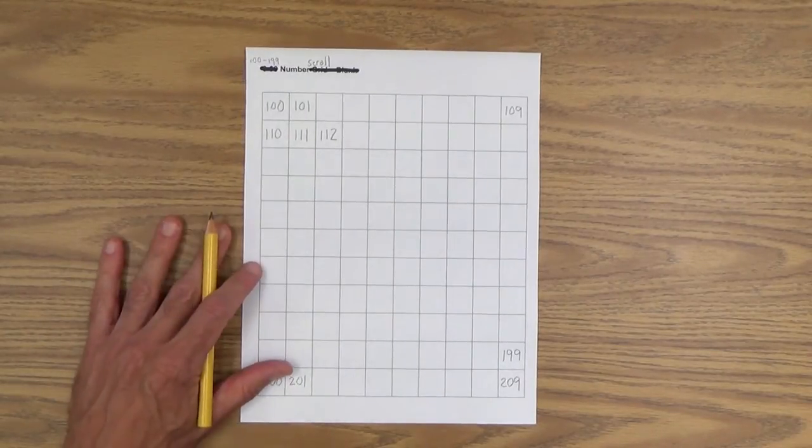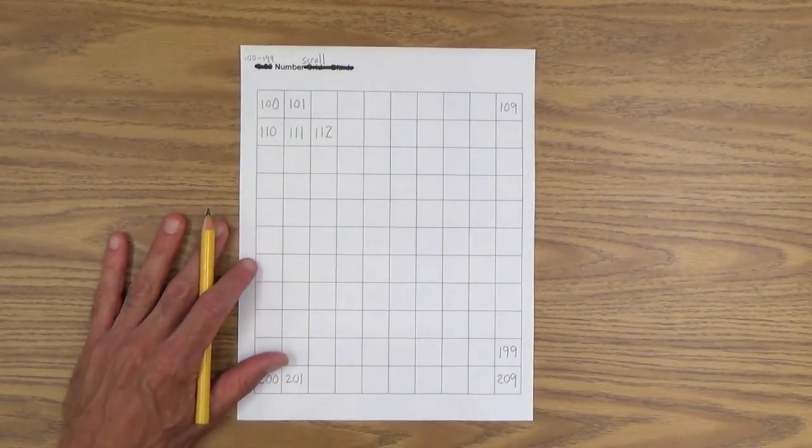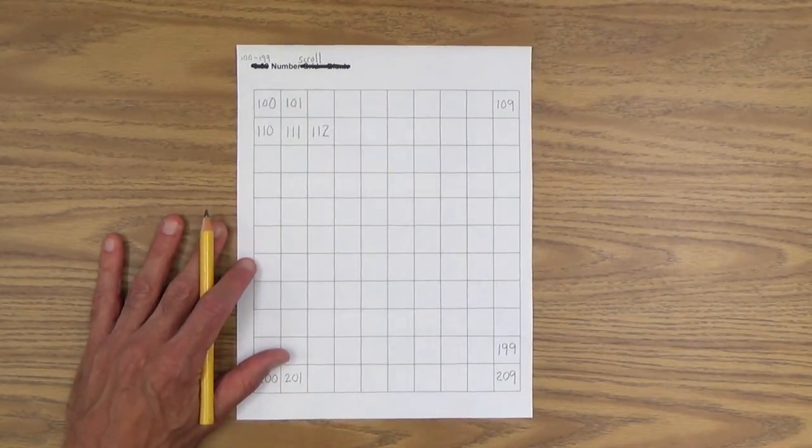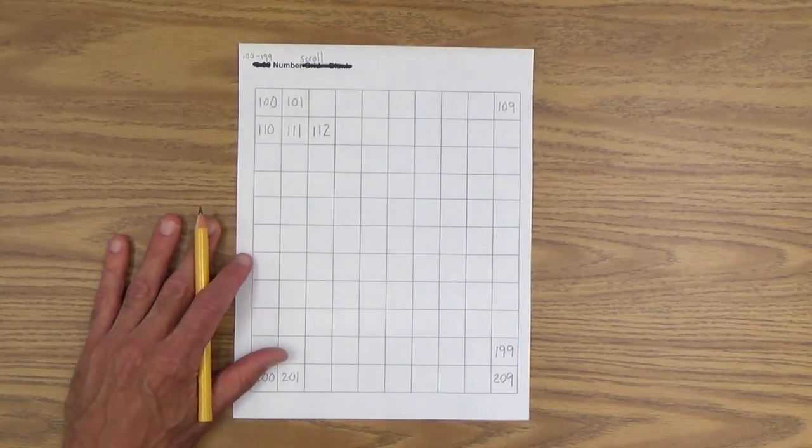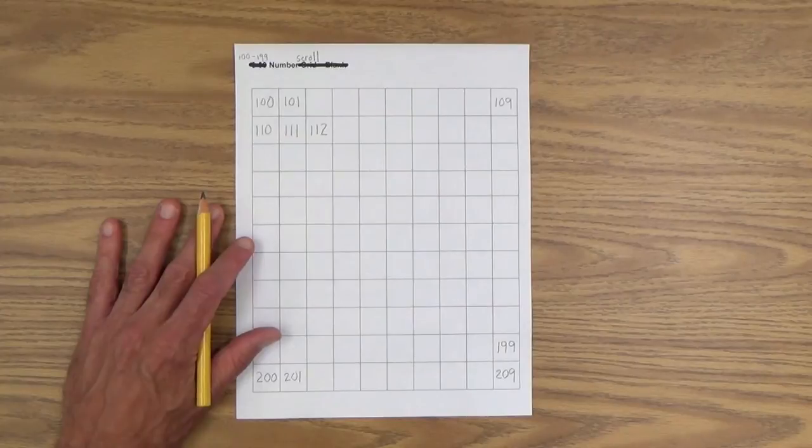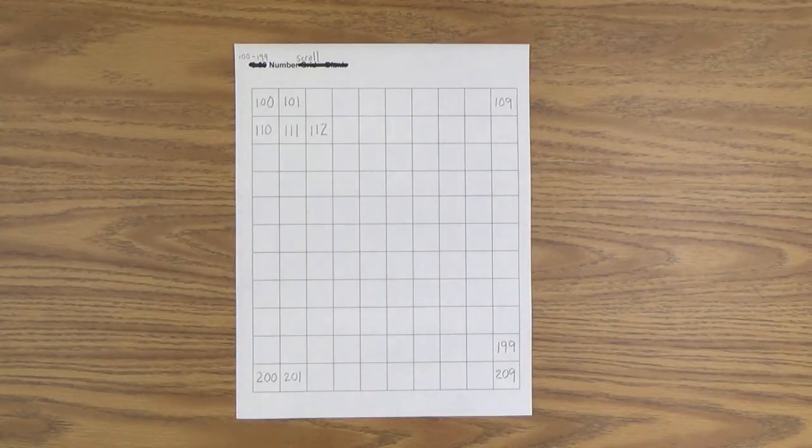So great activity for a child that's ready, advanced, ready to take on even bigger numbers. And of course, he or she could go all the way up to a thousand and you could even maybe put together a little book and that could be his or her number book from zero to a thousand. So that's number scrolls beyond 100.